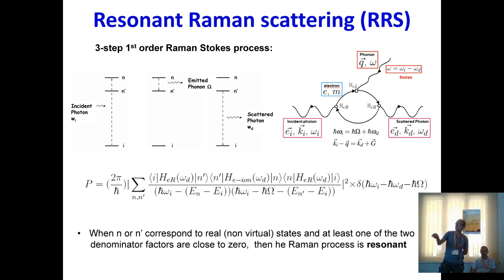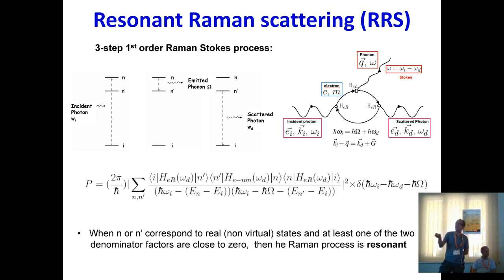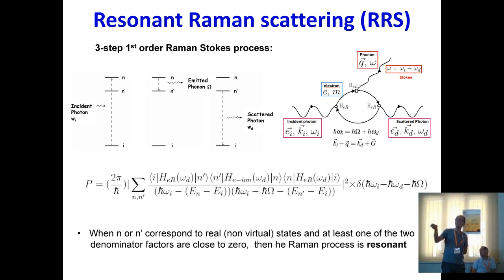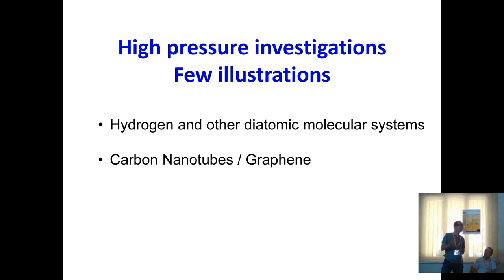Using Fermi's golden rule and second-order perturbation theory, the transition probability involves sandwiches of these three Hamiltonians. Crucially, the expression has denominators that can go to zero, making the process resonant. If the intermediate electronic states are real states, the Raman process becomes resonant Raman scattering. You achieve resonance by selecting the incident wavelength to match a real electronic transition.